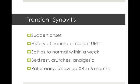Next up is transient synovitis. It has a sudden onset and can follow trauma or a recent viral infection, most commonly an URTI. Luckily it settles back to normal within a week and the treatment is bed rest, keeping weight off the hip with crutches, and simple analgesia. If at all worried, refer early and they may need a follow-up x-ray in six months to rule out Perthes disease.